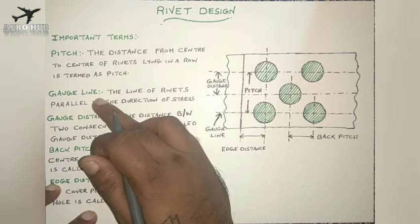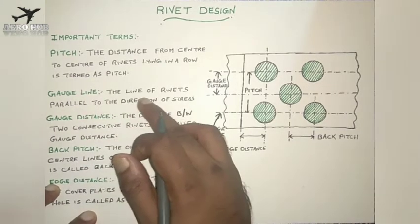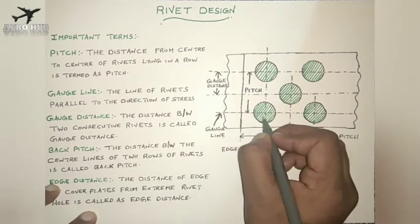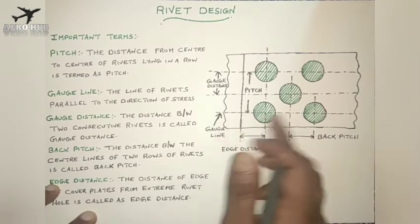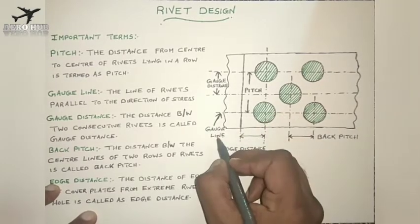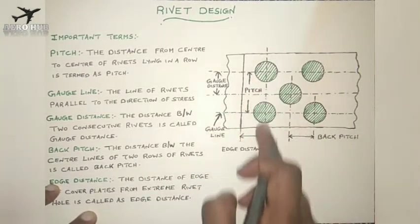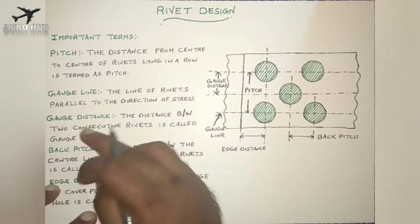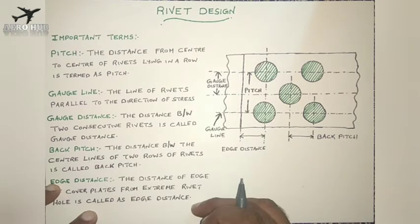Next one is gauge line. The line of rivets parallel to the direction of stress — it is nothing but the line passing through the center of rivets — that is called gauge line. You can see here we have a horizontal line and a vertical line. These are called gauge lines. The next term is called gauge distance.